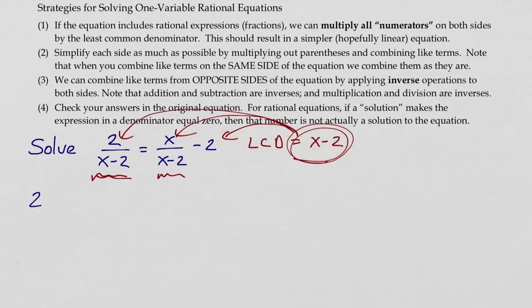So we have two times x minus two over x minus two equals x times x minus two over x minus two, and minus two times x minus two.